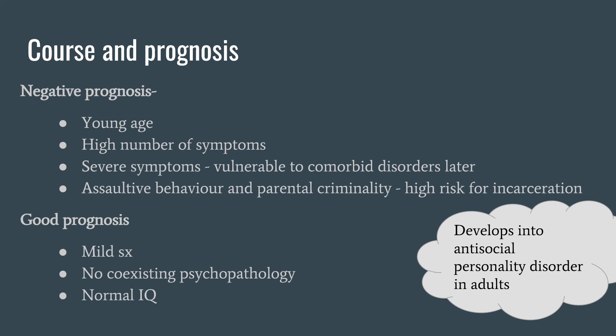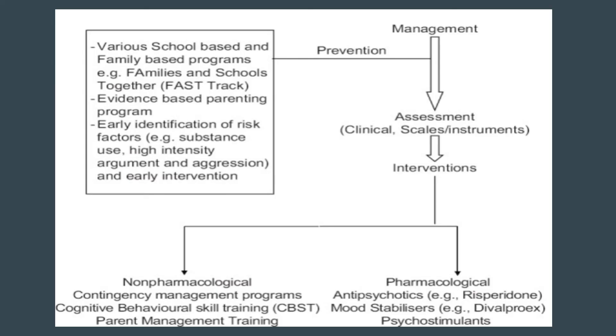Course and prognosis: Good prognostic factors are presence of mild symptoms such as truancy — violating rules but not the rights of others — no coexisting psychopathology, and normal intelligence. Bad prognostic factors include onset of symptoms at a younger age, greater number of symptoms, and severe symptoms. These patients are vulnerable to other comorbid psychiatric disorders later in life. Assaultive behavior and early criminality carry a high risk. Children with conduct disorder can develop into antisocial personality disorder in later life.